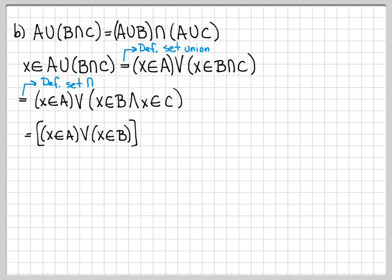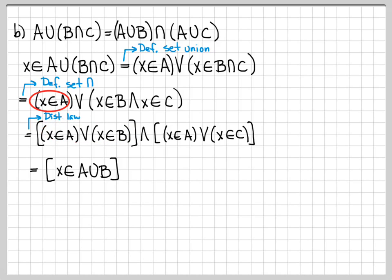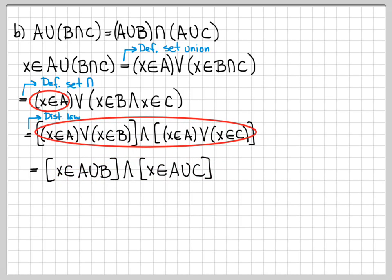Now I'm using the distributive law again — distributing 'X is in A' across this term. So I've used the distributive law. What is this first statement equal to? X is in A or X is in B — by definition that means X is in A union B. Same thing here: by definition, this is the union of two sets. From this line to the next, all I've done is use the definition of set union.